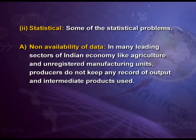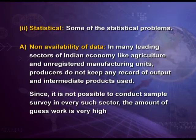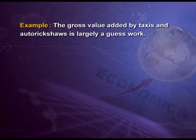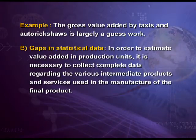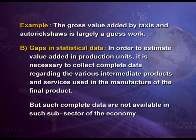Now, some of the statistical problems in measuring national income. First is non-availability of data. In many leading sectors of the Indian economy, like agriculture and unregistered manufacturing units, producers do not keep any record of output and intermediate products used. Since it is not possible to conduct sample surveys in every such sector, the amount of guesswork is very high. For example, the gross value added by taxis and auto rickshaws is largely a guesswork, which may or may not be correct. The second statistical problem is gaps in statistical data. In order to estimate value added in production units, it is necessary to collect complete data regarding the various intermediate products and services used in the manufacture of the final product, but such complete data are not available in many sub-sectors of the economy.